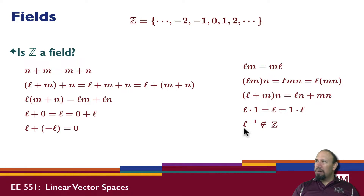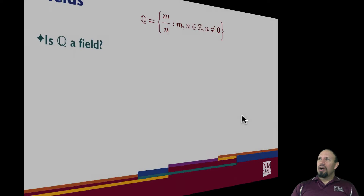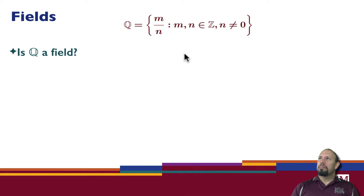Since 1/2 is not in the set of integers, this shows that Z is not a field. It satisfied all the other properties, but this one property — the multiplicative inverse — it did not satisfy. Therefore Z is not a field.